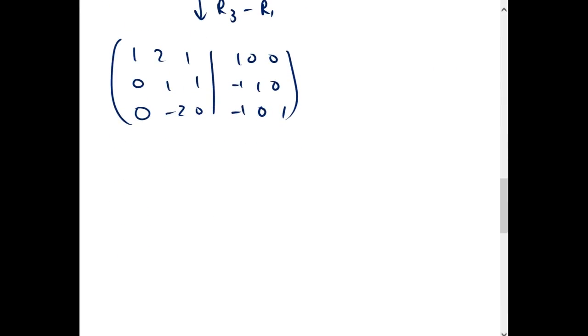And now we already have a 1 here so we're gonna get a zero there. We're gonna do that by taking R1 and subtracting 2 of R2. And that gives us 1, 0, negative 1, 3, negative 2, 0.